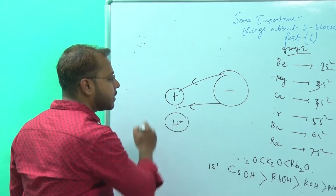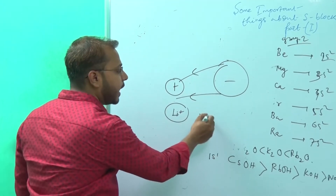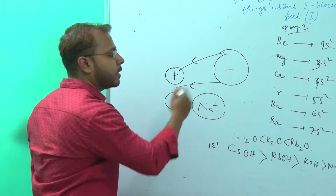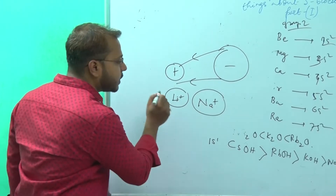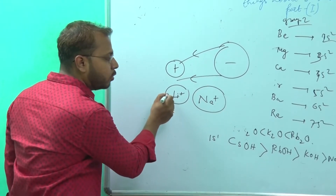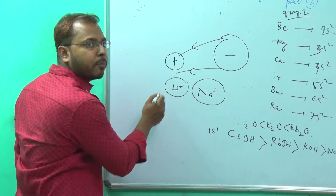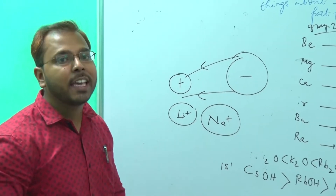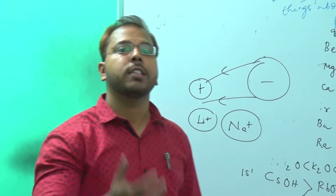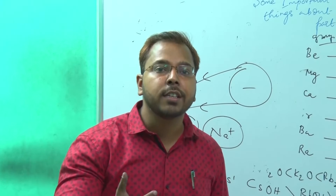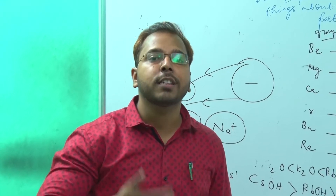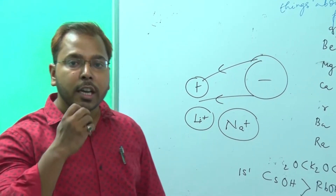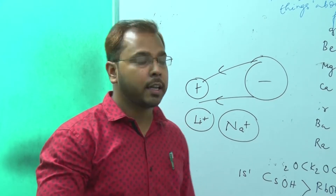According to Fajan's rule, the polarizing power (phi value) increases for smaller cations with higher charge density. The polarizing power of Li+ is more than that of Na+ and K+. As phi increases, polarizing power increases, which means the compound becomes more covalent.